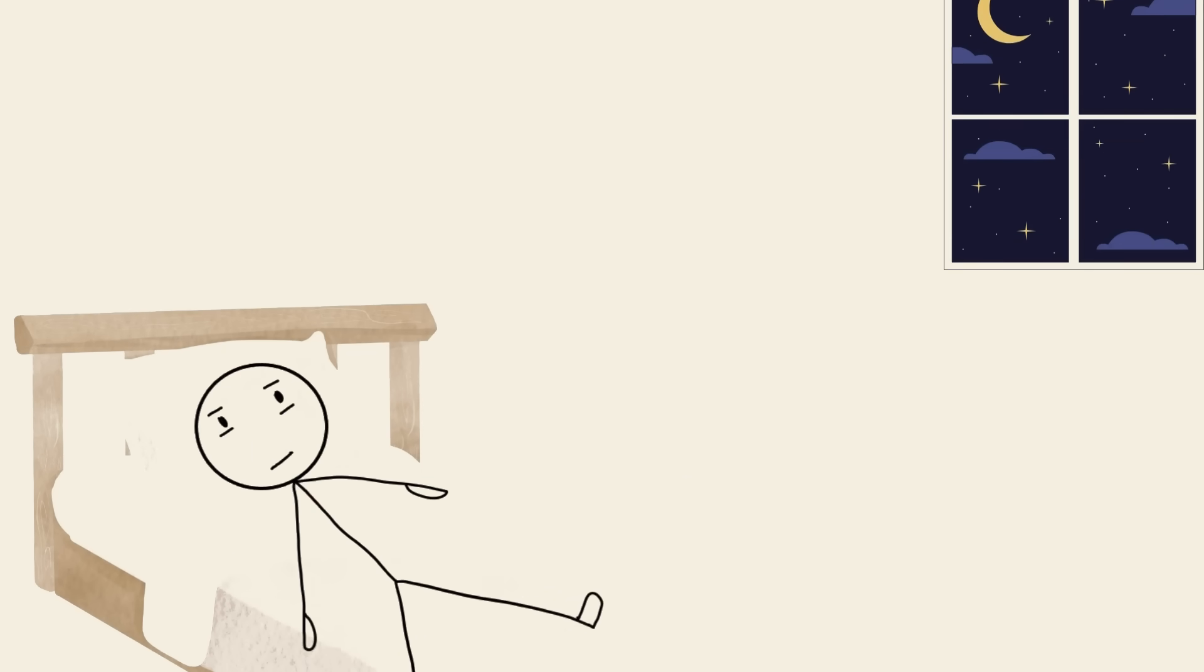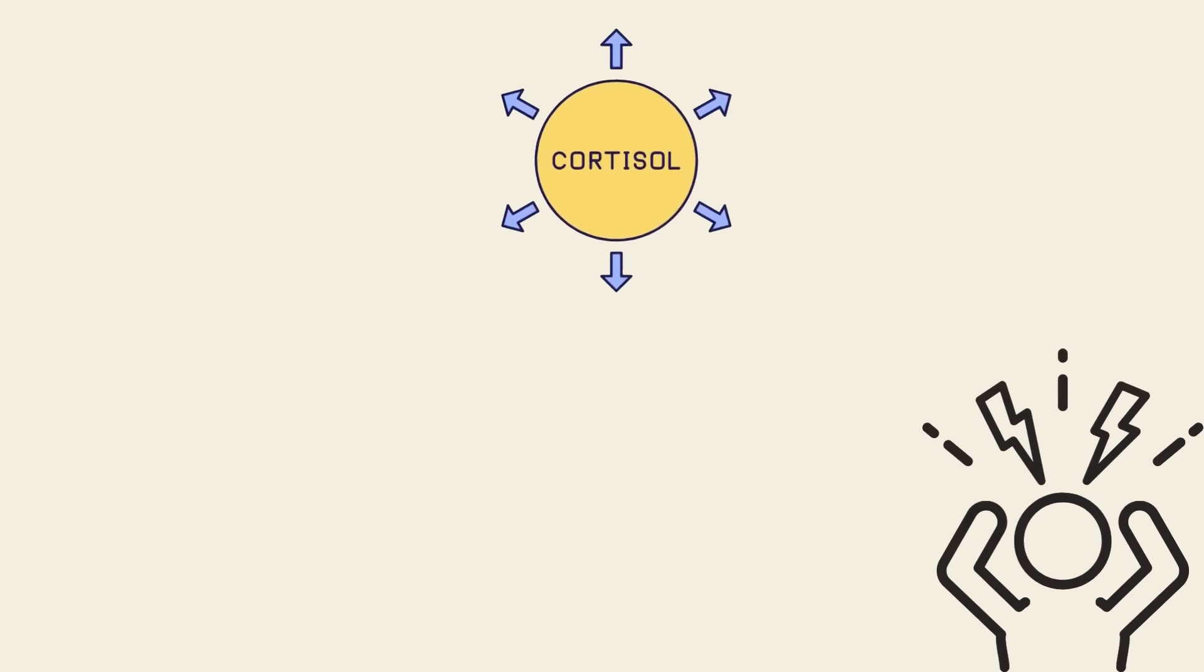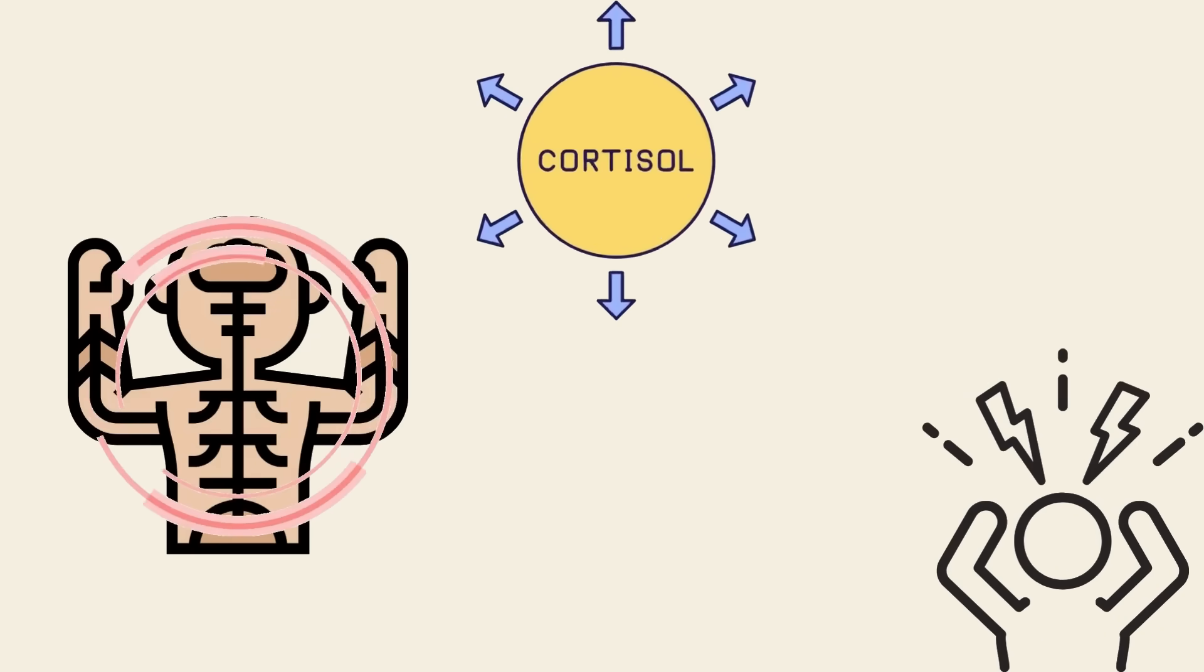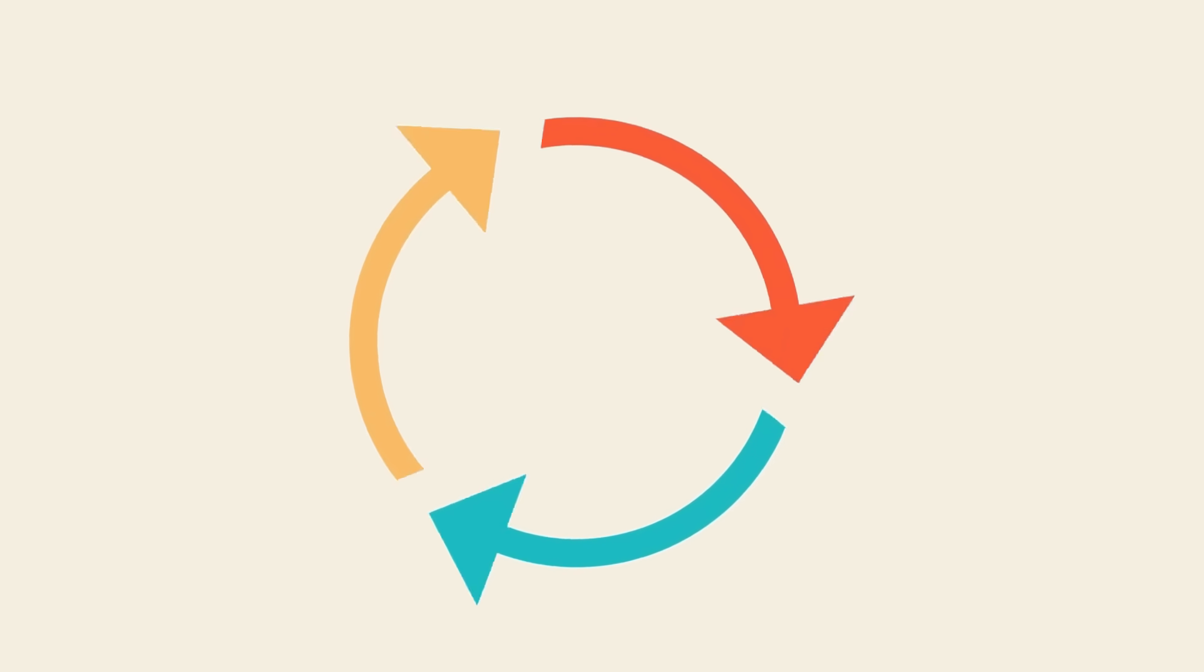This glitch is often a result of a hyperactive nervous system that doesn't know how to shut off. Cortisol, the stress hormone, lingers in your system, making your body feel alert even if your mind is screaming for rest. It becomes a feedback loop.